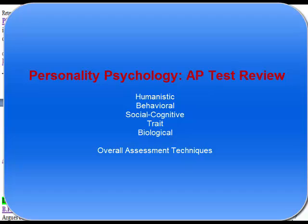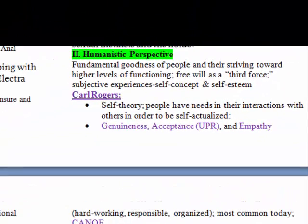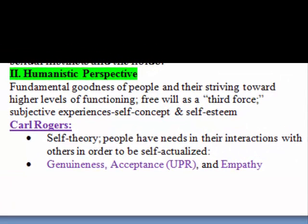The humanistic perspective developed in contrast to the psychoanalytic perspective, which had focused a lot on sick people — that's what Freud focused on. So humanism wanted to focus on healthy people. Humanists focused on the goodness of people; they said that people are innately good and that free will is a key component. Free will was called a 'third force,' contrasting it against the determinism of psychoanalytic theory.